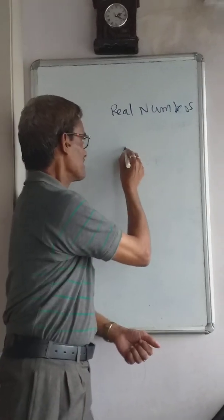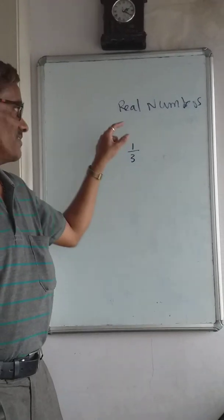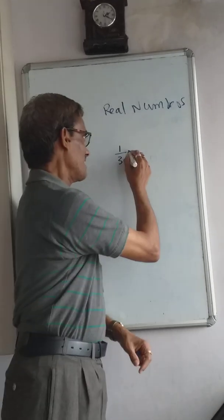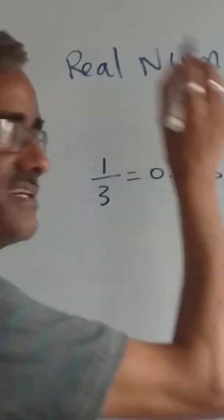One example: suppose you divide 1 divided by 3. After dividing, what answer will you get? 0.333... The number keeps on going.